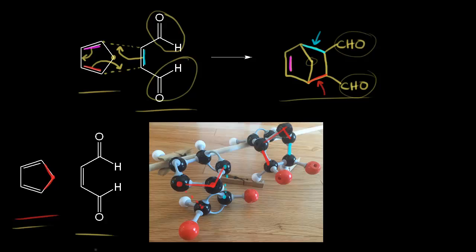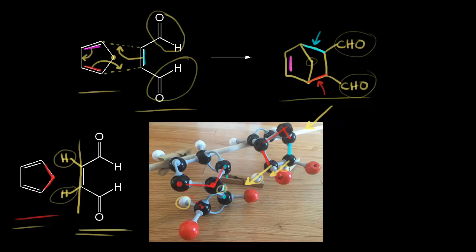Next, we need to think about the stereochemistry of our dienophile. We have a double bond with hydrogens on the left side. If we draw a line here, the stuff on the left side goes down. So these hydrogens, if we follow them along, are going away from us in the final product — the hydrogens would be down. And these aldehydes, shown in red on the model set, end up on the same side and are actually coming out at us.